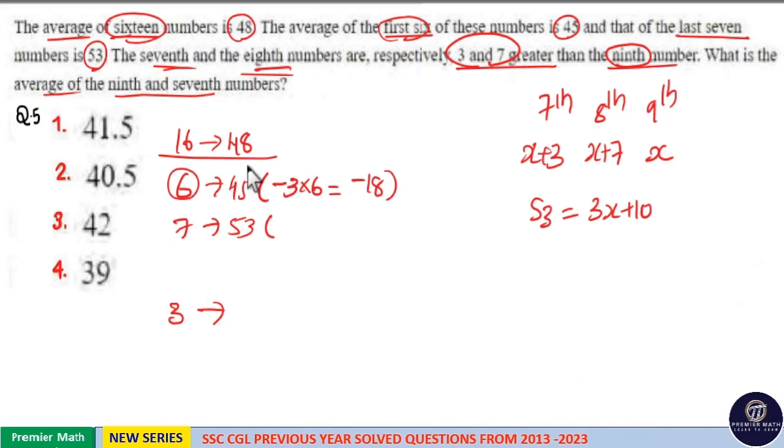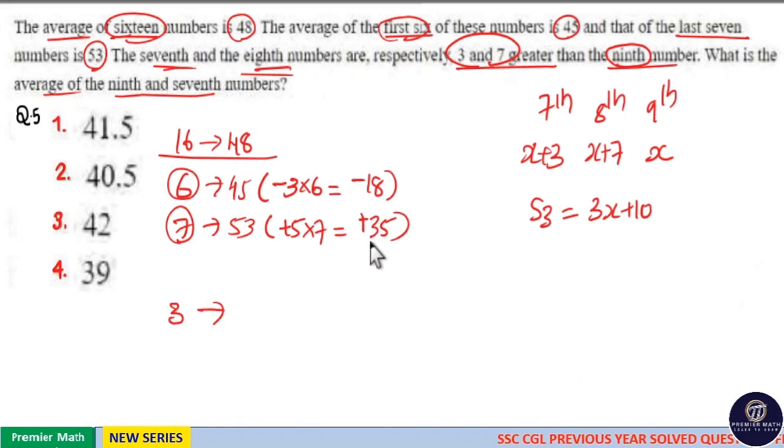Same way, 53 is plus 5 greater than 48. Now this plus 5 increment in average is for this 7 numbers. So plus 5 into 7 is equal to 35. That is total there is 35 increment in the sum of this 7 numbers. Now overall increment is equal to 35 minus 18 is 17.